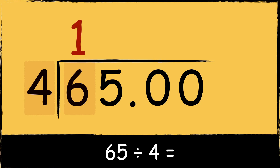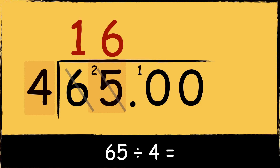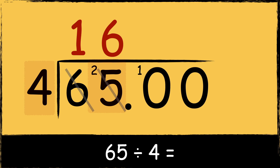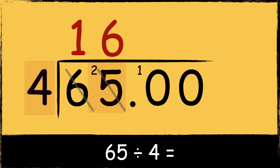Four goes into six once with two left over. Then four goes into twenty-five, six times with one left over. Notice how we're using the zeros after the decimal point to keep dividing. As we're now working after the decimal point, we also need to place a decimal point in the answer. Next, four goes into ten twice with two left over.